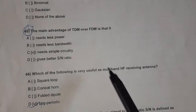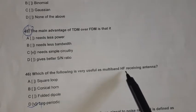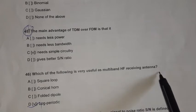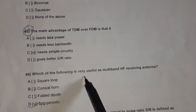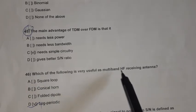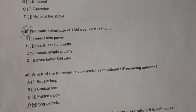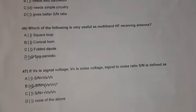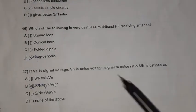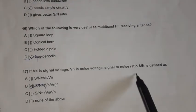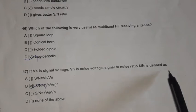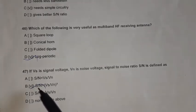Question 44: The probability density function of thermal noise is Poisson distribution. Question 45: The main advantage of TDM over FDM is that TDM needs simpler circuitry. Question 46: Which of the following is very useful as a multiband HF receiving antenna? The answer is a log-periodic antenna.